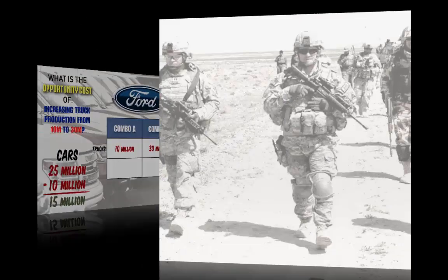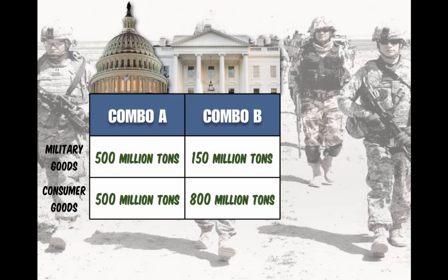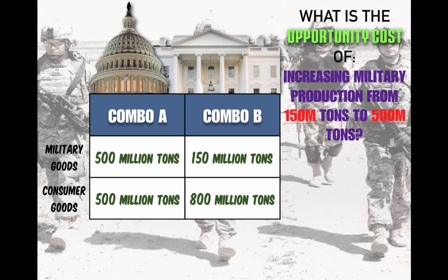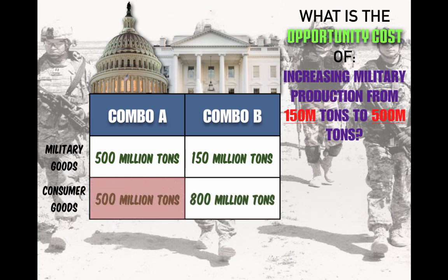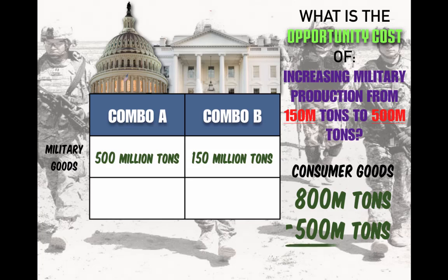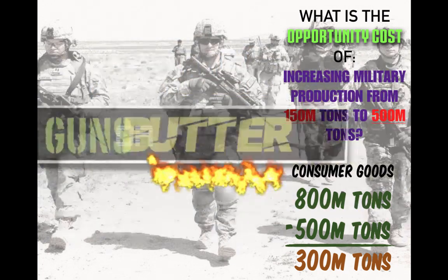Opportunity costs can also be weighed when governments make decisions. The United States government can produce military goods and consumer goods with its scarce resources. At Combination A, it can produce 500 million tons of military goods and 500 million tons of consumer goods. At Combination B, 150 million tons of military goods and 800 million tons of consumer goods. Increasing military production from 150 to 500 million tons means decreasing consumer goods from 800 to 500 million tons — an opportunity cost of 300 million tons of consumer goods. This is called the guns or butter dilemma.